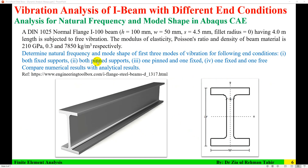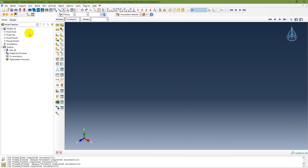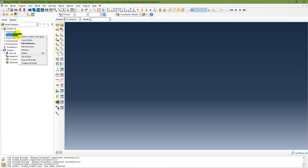Now I am going to analyze the beam with both pin supports, i.e., the pin-pin condition. For pin-pin condition, U1 and U2 need to be set equal to zero. I already have the fixed-fixed beam model, so I am going to copy that model, and the model is being copied here as the pin-pin model.